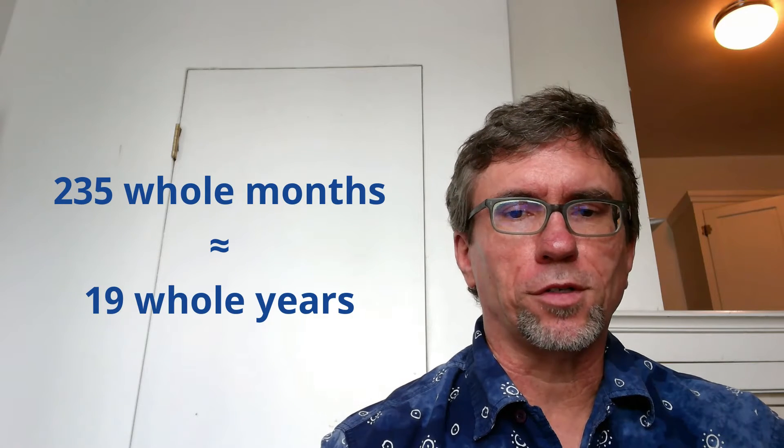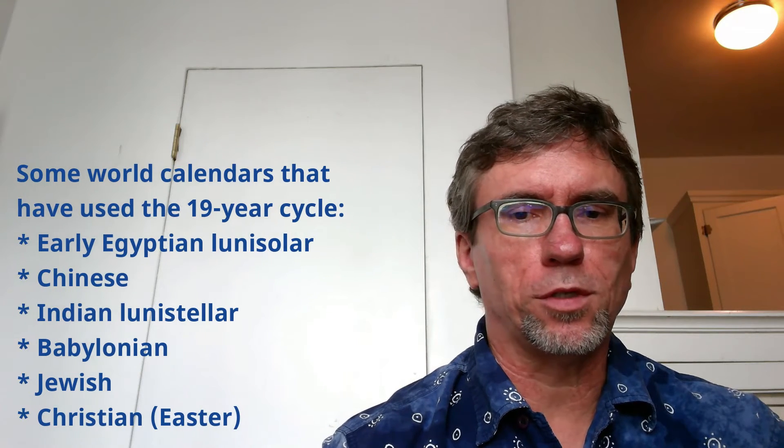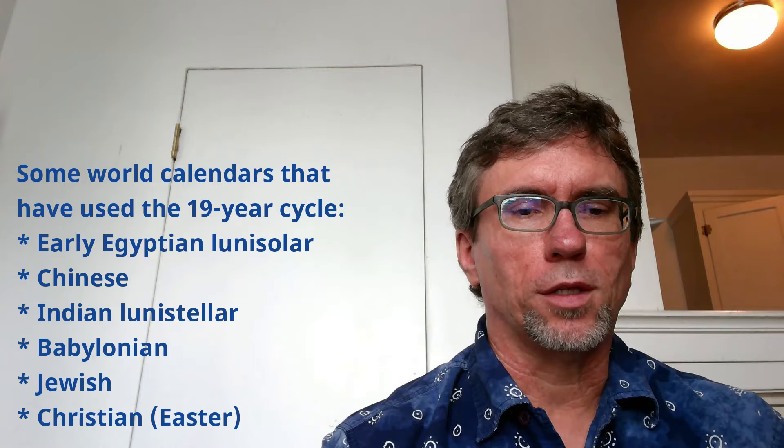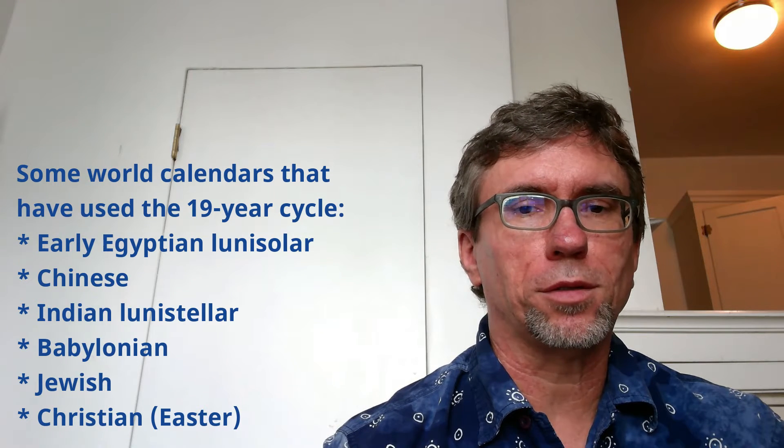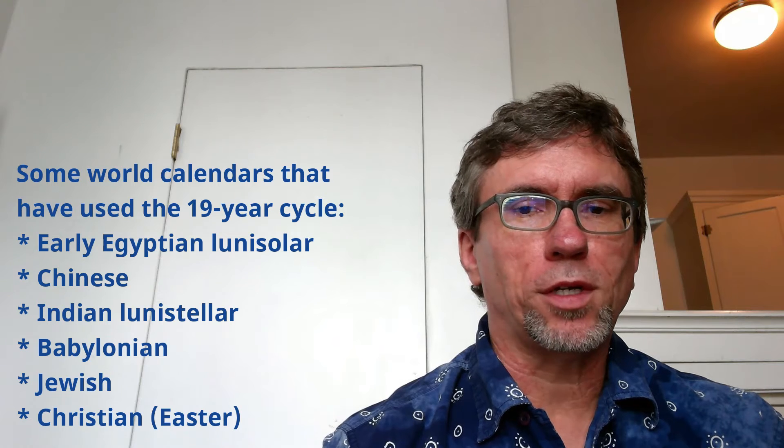The fact of this coincidence between the lunar cycle and the solar cycle at 19 years has been used in calendars around the world: the early Egyptian lunisolar calendar, the Chinese calendar, the Indian lunisolar calendar, and the Babylonian calendar.